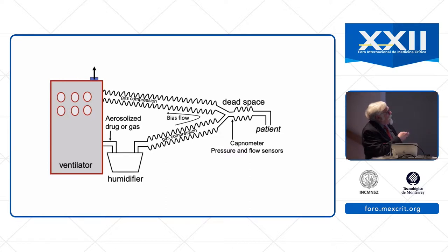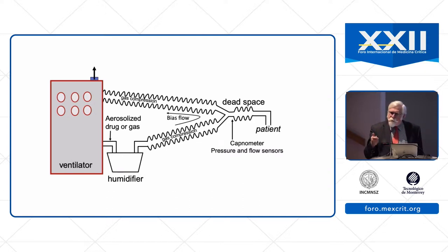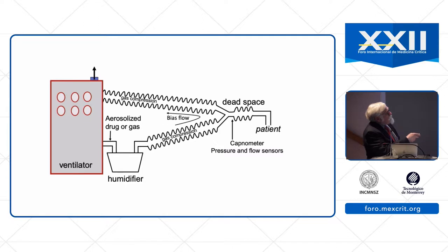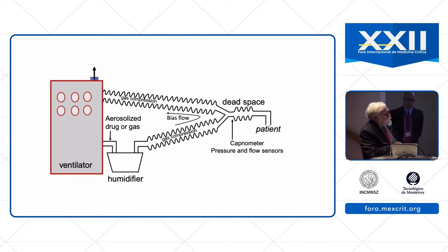We can deliver aerosolized drugs or gases by injecting them into the ventilator circuit. It's important to appreciate the amount of dead space, which is the volume of the circuit between the Y connector and the patient. The volume of dead space in the circuit will effectively reduce the alveolar ventilation for the patient. We want this dead space to be as small as possible. We want to avoid placing tubing between the Y connector and the patient, and avoid adding other devices to the circuitry which could increase dead space and reduce effective ventilation.